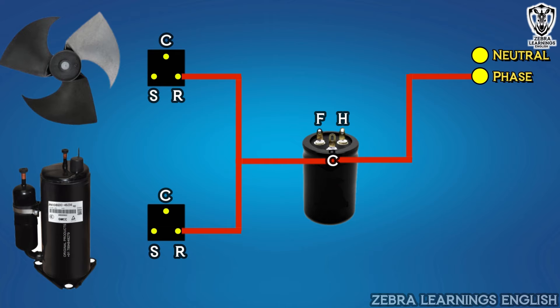Then, connect from the fan terminal of the capacitor to the starting terminal of the fan motor. And from the herm terminal of the capacitor to the starting terminal of the compressor.